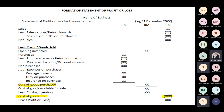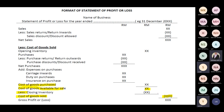Cost of goods purchased is not yet cost of goods sold. To get cost of goods sold, we first find cost of goods available for sale by adding opening inventory and cost of goods purchased. Then we subtract the closing inventory — the stock on hand at the end of the reporting period, i.e., 31st December — to arrive at the cost of goods sold.